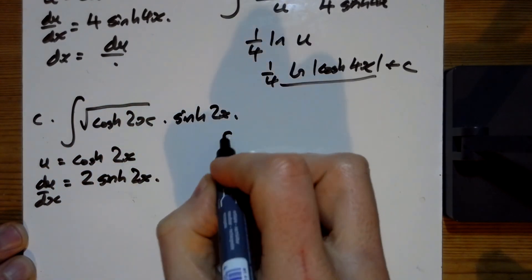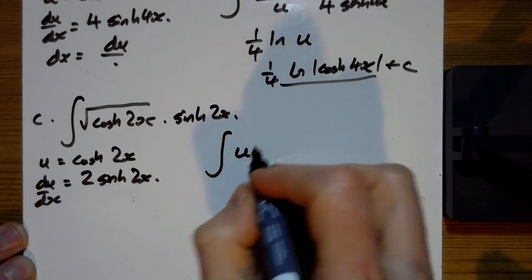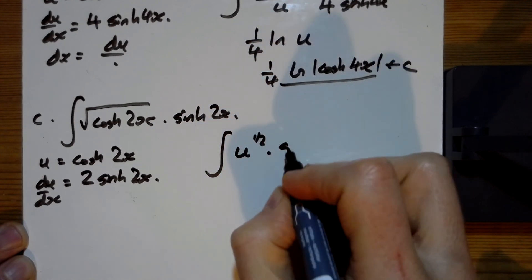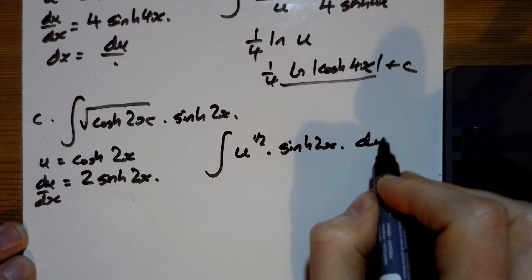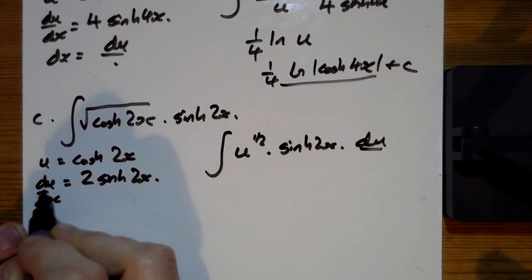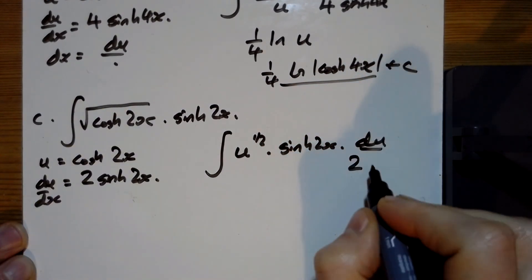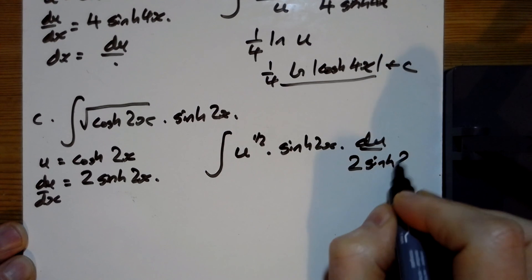And so what have we got? We have the integral of u to the power of a half, sinh two x, and this rearranging is du over two sinh two x.